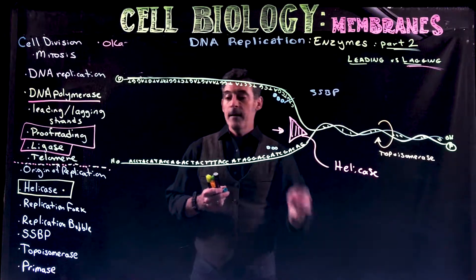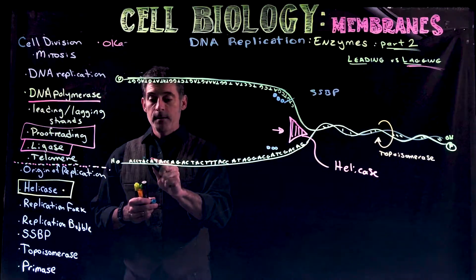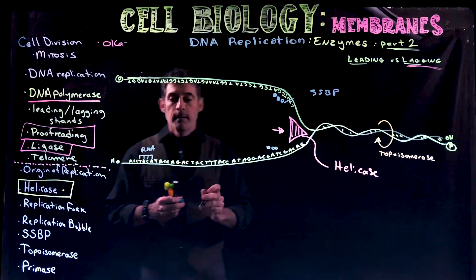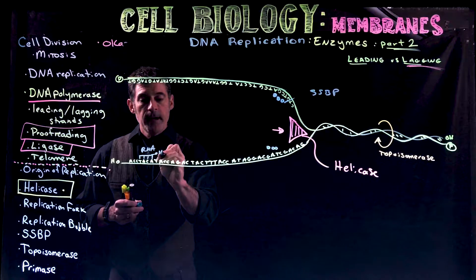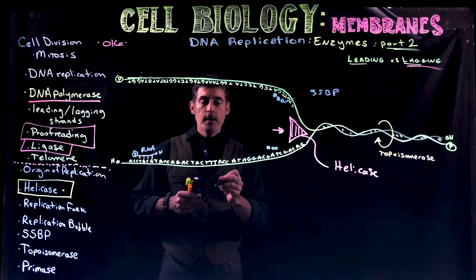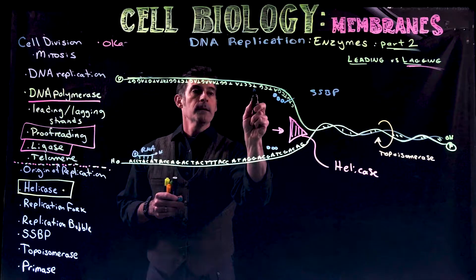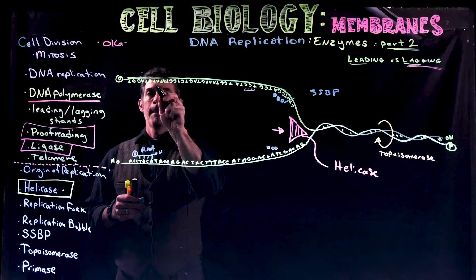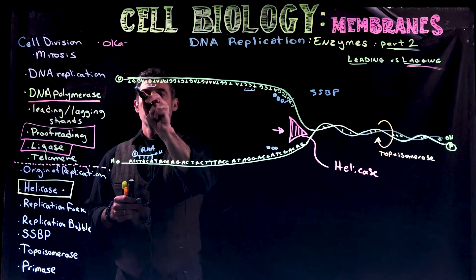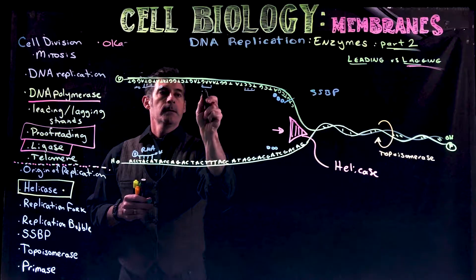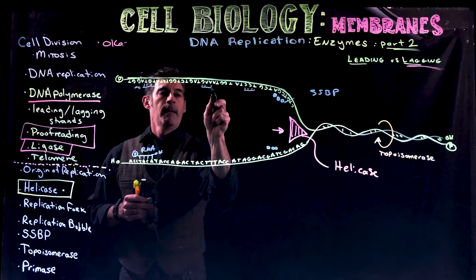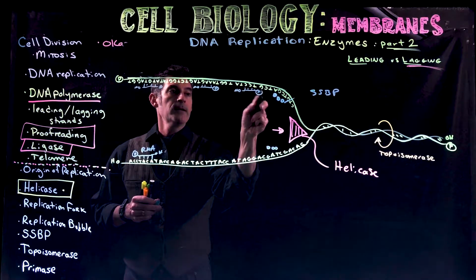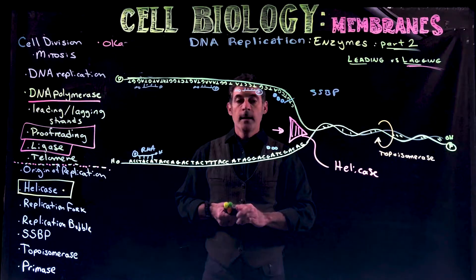We have an enzyme called primase creating little RNA primers that are going to provide three prime OH ends. The ends are actually really important — three prime, five prime, that sort of thing.